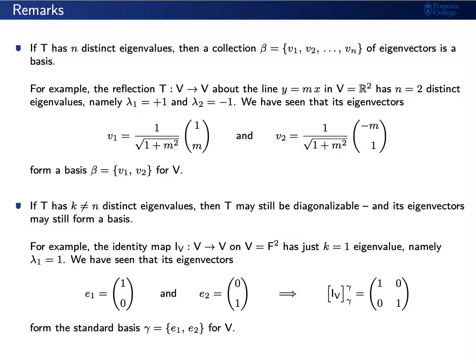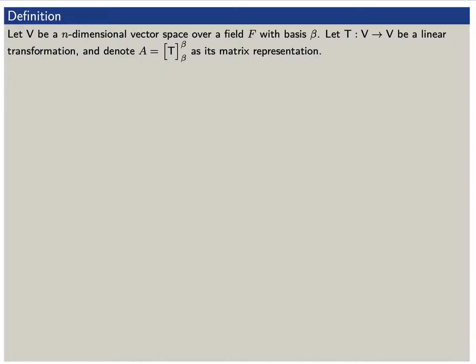In order to really determine whether a linear transformation is diagonalizable, today we're going to introduce the concept of multiplicity. Let V be an n-dimensional vector space with basis beta, T a linear transformation from V to itself, and A the matrix representation of T with respect to beta. Assume that T has k distinct eigenvalues lambda 1 through lambda sub k.